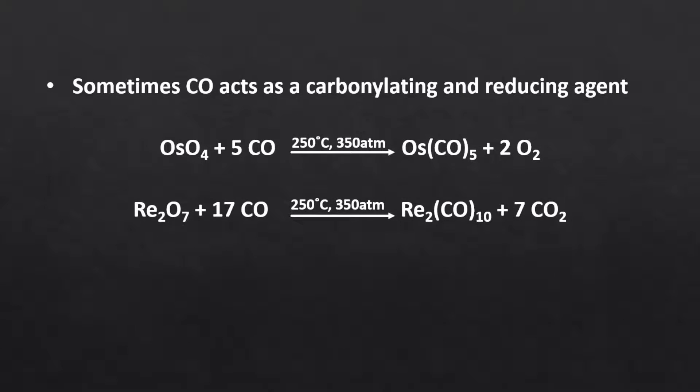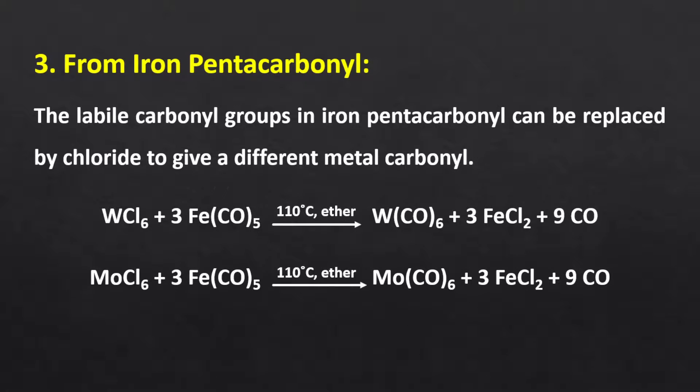Sometimes carbon monoxide acts as both a ligand and a reducing agent. Transition metals from the 4d series can be reduced by carbonyl only when they are in higher oxidation states. For example, the oxidation states of rhenium and osmium in Re2O7 and OsO4 are +7 and +6 respectively. These high oxidation states, combined with the inert pair effect, favor reduction in the presence of only carbonyl. Metal carbonyl complexes can also be prepared from iron pentacarbonyl, where the labile carbonyl groups can be replaced by chloride. For example, chlorides of tungsten and molybdenum can react and undergo substitution to form their carbonyl complexes.